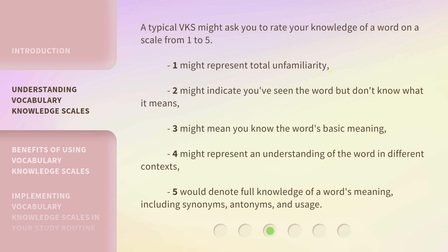A typical VKS might ask you to rate your knowledge of a word on a scale from 1 to 5. 1 might represent total unfamiliarity. 2 might indicate you've seen the word but don't know what it means. 3 might mean you know the word's basic meaning. 4 might represent an understanding of the word in different contexts. 5 would denote full knowledge of a word's meaning, including synonyms, antonyms, and usage.